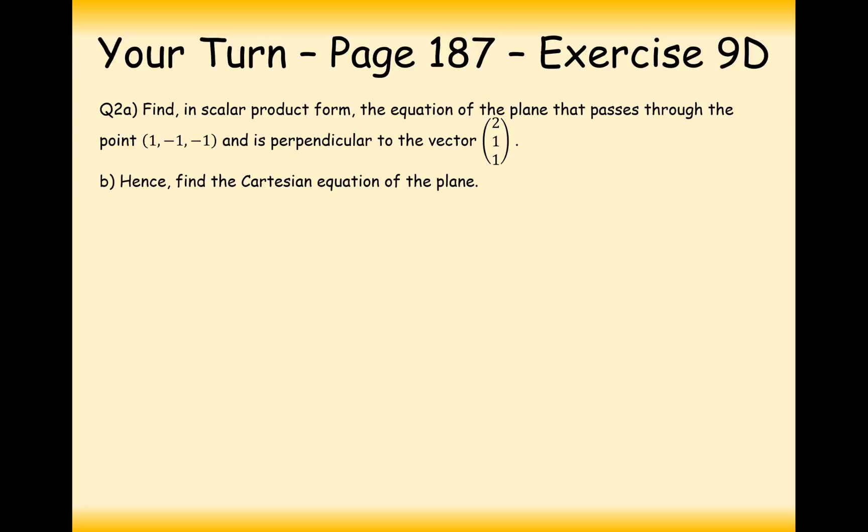Okay. So your time to have a go at this question here, then. It's question 2a. Find in scalar product form the equation of the plane that passes through the points 1, minus 1, minus 1, and is perpendicular to 2, 1, 1. Hence, find the Cartesian equation of the plane. Pause the video and try this one out.